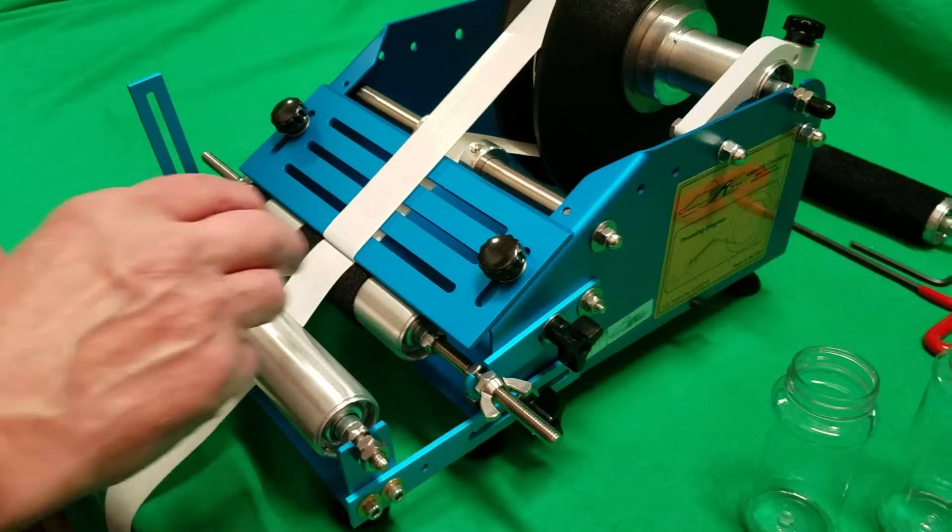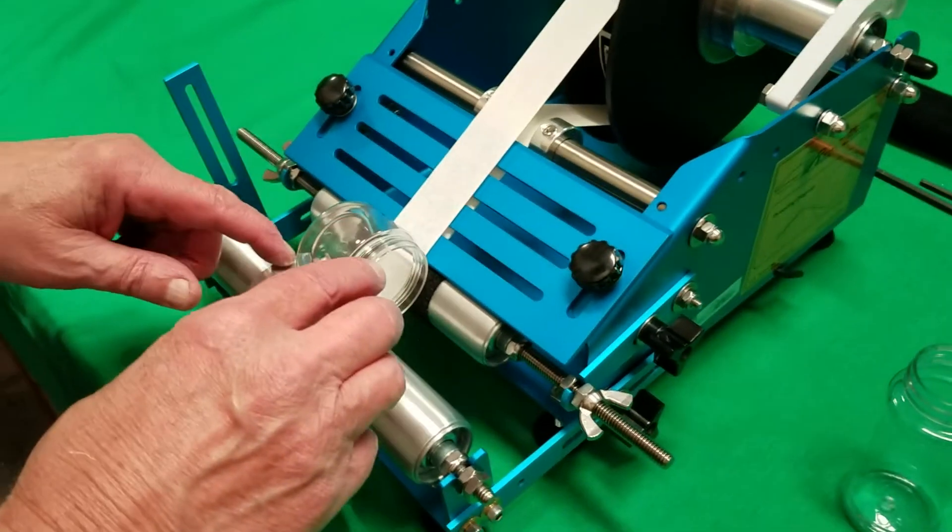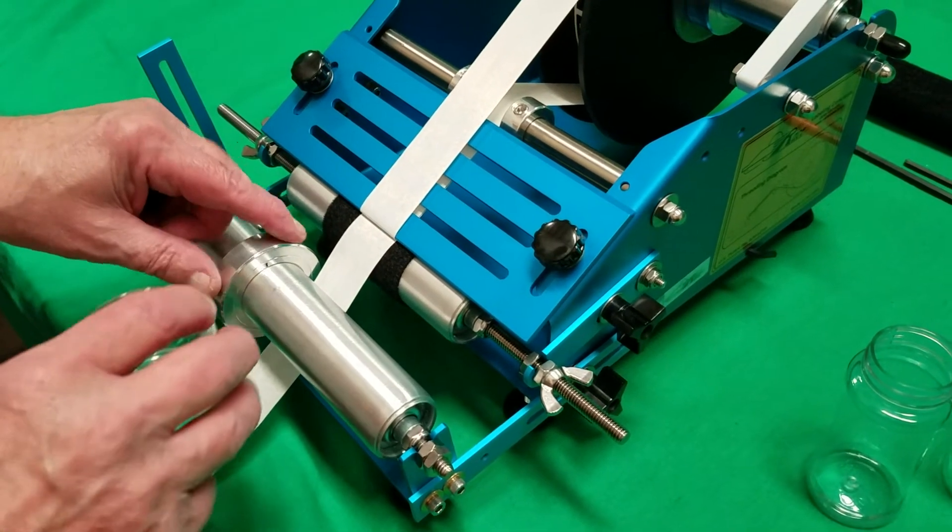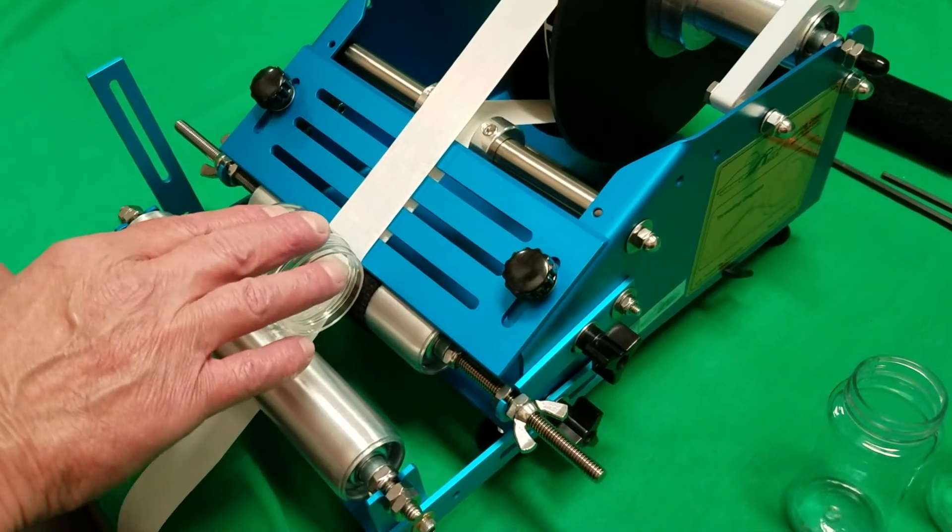And to do that, we'll go into the cradle area here and we go up against the bottle stop, which is this thing right here. So it's in the same place each time.